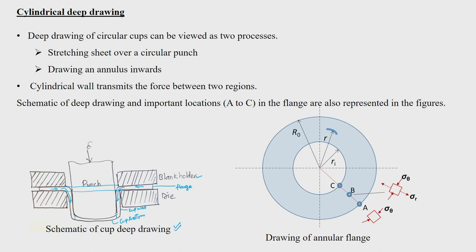We have already discussed the mode of deformation and state of stress in the cup wall and in the flange region. Deep drawing of a circular cup can be viewed as two different processes. One is stretching the sheet over a circular punch — that is the cup bottom getting stretched below the punch. And the other is drawing an annulus inward, which is basically converting the flange region into the cup wall.